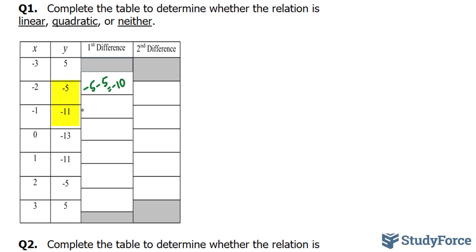Negative 11 minus negative 5 gives us negative 11 plus 5, which is negative 6. Notice that this negative 10 and this negative 6 are not the same. Therefore, we know right away that this relation is not linear.